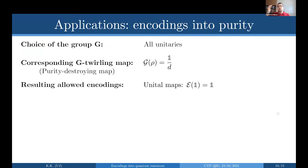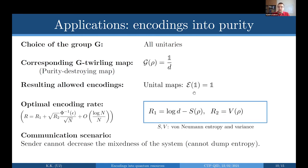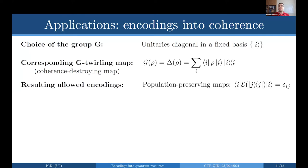Application one: choose the group of all unitaries, so the G-twirling channel is just the channel that sends everything to a maximally mixed state. The corresponding allowed encodings are all the unital maps. In the communication scenario where Alice is given some state rho and can only do unital channels — meaning she cannot decrease mixedness or dump entropy — the rate is simply given by log d minus the entropy of rho. The bigger the entropy, the less information you can encode.